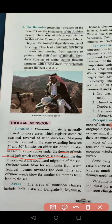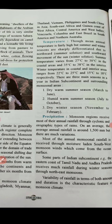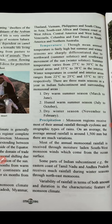The areas of monsoon climate are south and southeast Asia, which receive monsoon from the southwest monsoon winds. These include India, Pakistan, Bangladesh, Myanmar, Thailand, Vietnam, Philippines, South China, Southeast Africa, the Guinea coast of East Africa, Central America, and others.